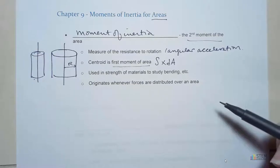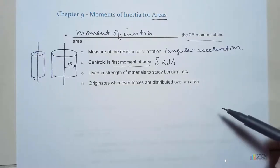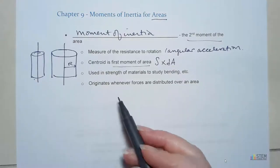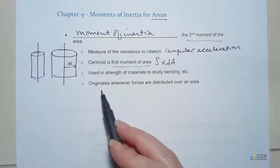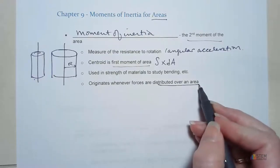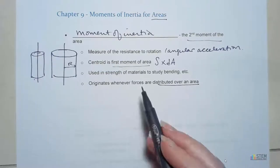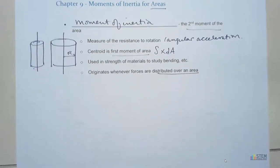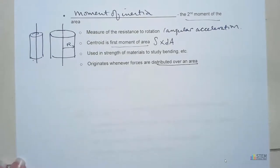You use mass moments of inertia in dynamics when you're looking at rigid body motion. There are lots of uses for moments of inertia, and you'll see them over and over again — sometimes they'll be for areas, sometimes they'll be for masses. Moments of inertia originate whenever forces are distributed over an area, because those forces tend to cause a rotation if they are distributed.